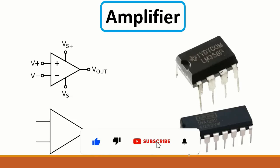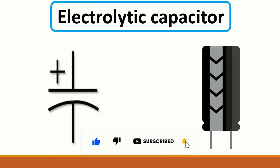Next we have the electrolytic capacitor — a THT through-hole technology electrolytic capacitor with two terminals. This is a polarized capacitor with a plus and minus terminal, and it is used to filter voltage or current. You will always find this capacitor after the bridge rectifier on every electronic motherboard.